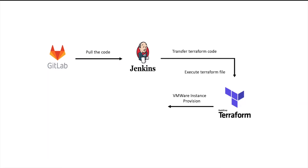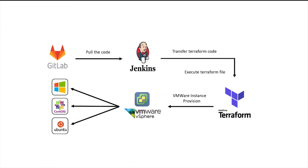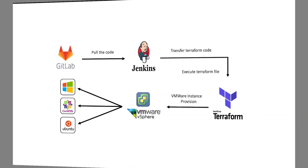In the final stage, Jenkins will execute the Terraform apply on the Terraform machine, which will provision the CentOS Virtual Machine Instance, the Ubuntu Virtual Machine Instance, and the Windows Virtual Machine Instance. Finally, all three VMware vSphere Instances will be provisioned in VMware vSphere.